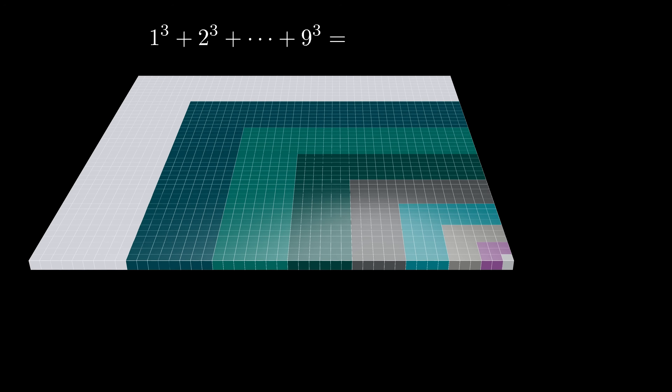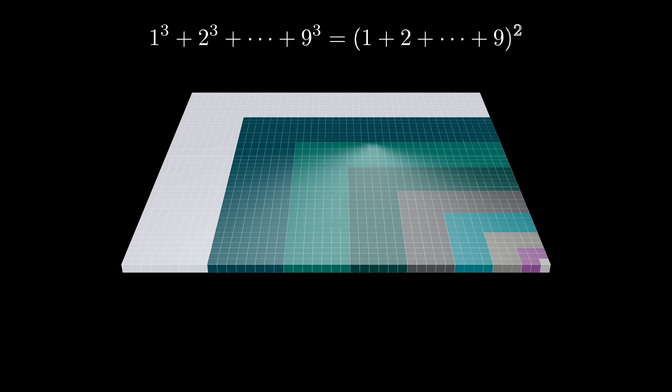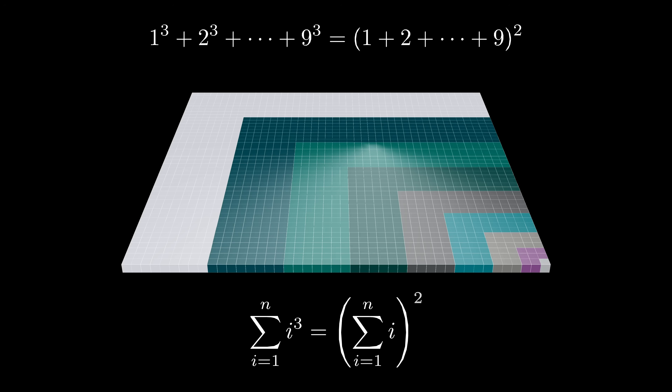This square array has a side length given by the sum of the first nine positive integers. Therefore, this visualization demonstrates that the sum of the first nine cubes is equal to the square of the sum of the first nine positive integers. It turns out there's nothing special about the number 9 — this works if we replace 9 with any number n, and a similar visualization will always work. Many people balk at visual proofs like this because they think it's not clear for all n values, but this diagram does have all the key ingredients so that you could provide a formal proof.